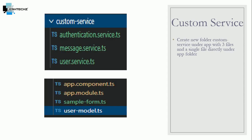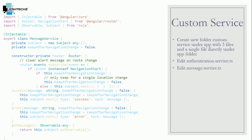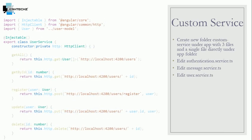In this tutorial the first thing we will be doing is creating a new folder named custom service, and inside this folder we will be creating three services: authentication service, message service, and user service, and one file directly under the app folder with the name user model dot ts. We will be adding code to each file starting with authentication service, message service, user service, and user model dot ts.